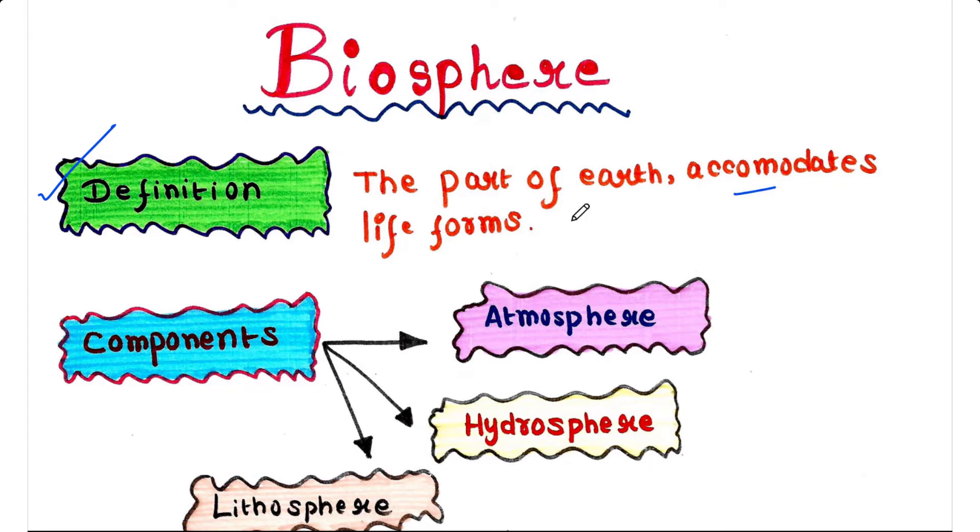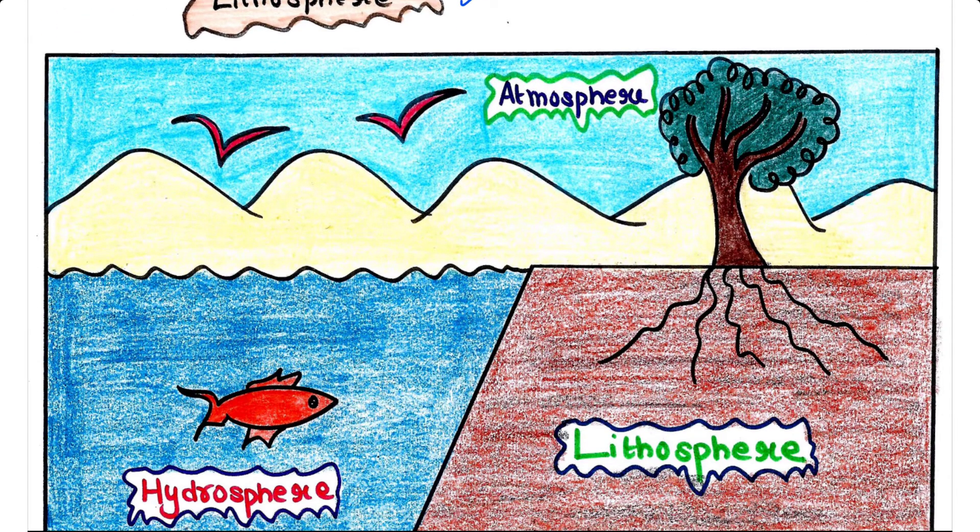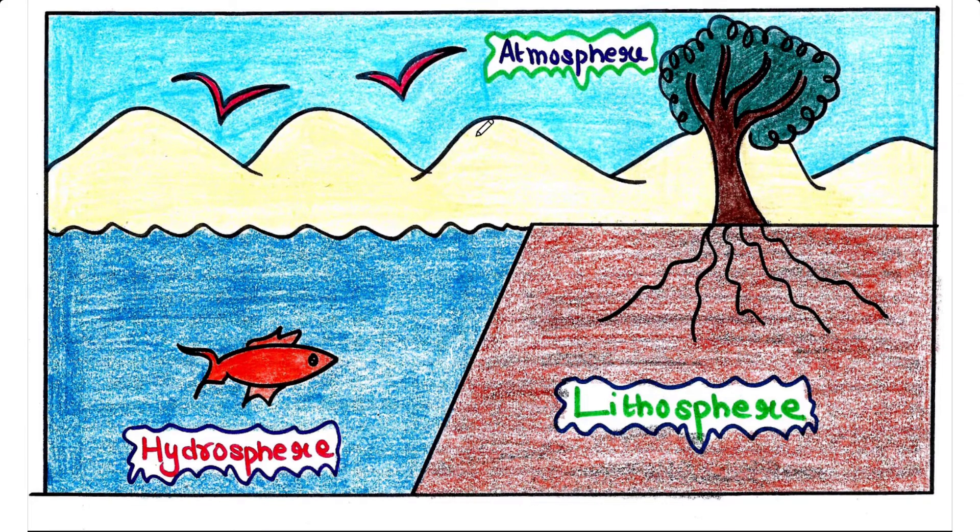It includes both ground and air, therefore the region on, above, and below the surface of earth are parts of biosphere. Now, the main three components of biosphere are atmosphere, hydrosphere, and lithosphere. So we can see in this picture: atmosphere, hydrosphere, and lithosphere. Let's talk about them one by one.